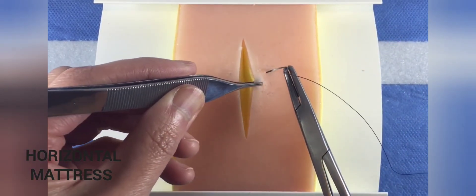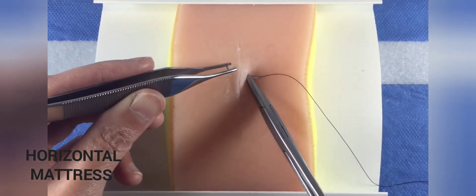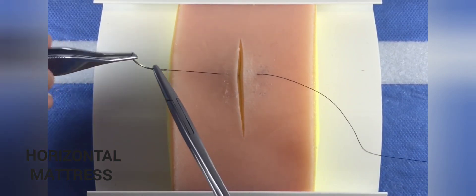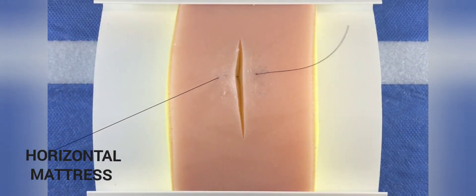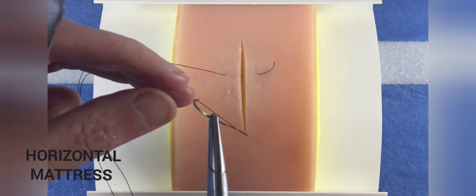To perform a horizontal mattress stitch, drive the needle horizontally across the wound as you would a simple interrupted stitch. Then reload the needle. This is often done backhand.